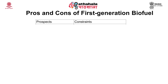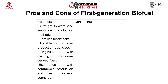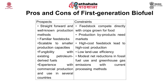Looking at the pros and cons of first generation biofuel: these have straightforward and well-known production methods, familiar feedstocks, scalability to smaller production capacity, fungibility with existing petroleum-derived fuels, and experience with commercial production in several countries. However, these feedstocks compete directly with crops grown for food. Production byproducts need markets, high-cost feedstocks lead to high production costs, low land use efficiency, and modest net reduction in fossil fuel use and greenhouse gas emissions with current processing methods.